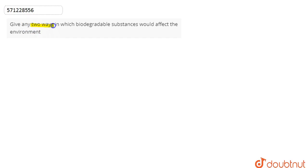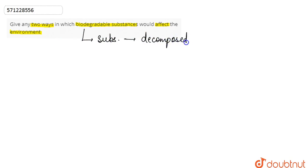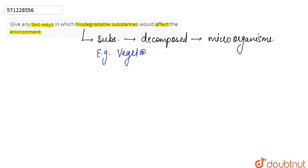In this question, we are asked to give any two ways in which biodegradable substances would affect the environment. Biodegradable substances are those that can be decomposed or degraded by microorganisms. They are comparatively better than non-biodegradable substances. Some examples of biodegradable waste are vegetable waste, cotton, etc.